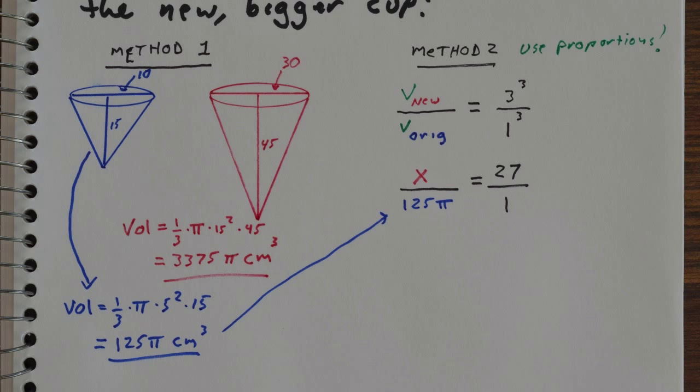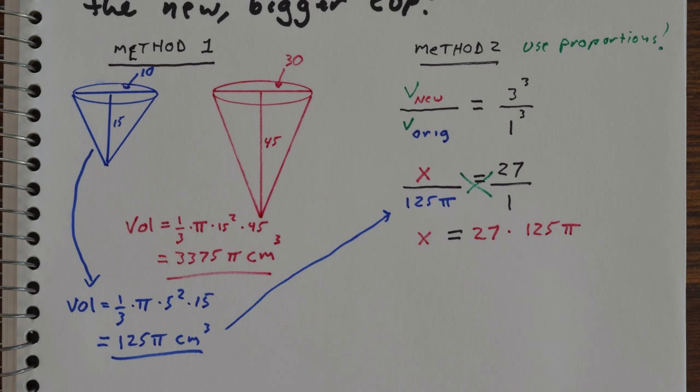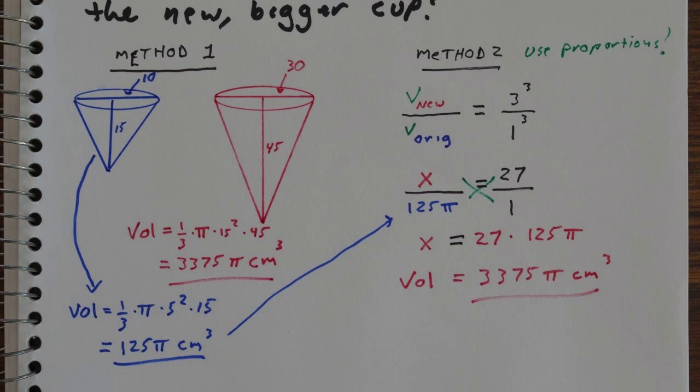And so if we set that into our proportion, we know x over 125 pi must equal 27 over 1. Again, 27 came from 3 to the third, 1 to the third of course is just 1. Now if you solve that using cross multiplication, we get a volume of 3,375 pi cubic centimeters. So again, two ways to solve the same problem.